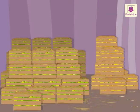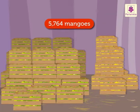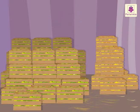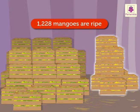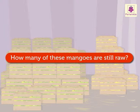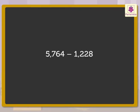Look at those boxes. They contain 5,764 mangoes. Only 1,228 of these mangoes are ripe. So, how many of these mangoes are still raw? Here, we can get the answer by finding the difference between 5,764 and 1,228.